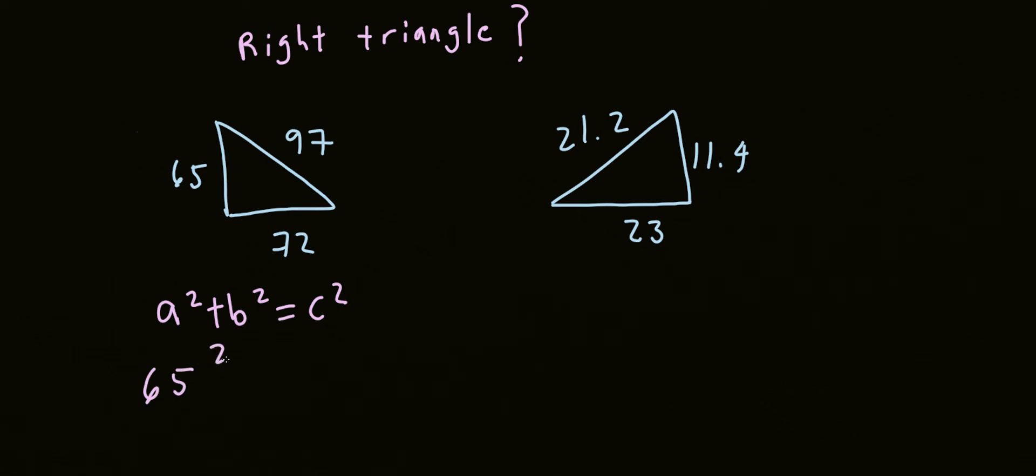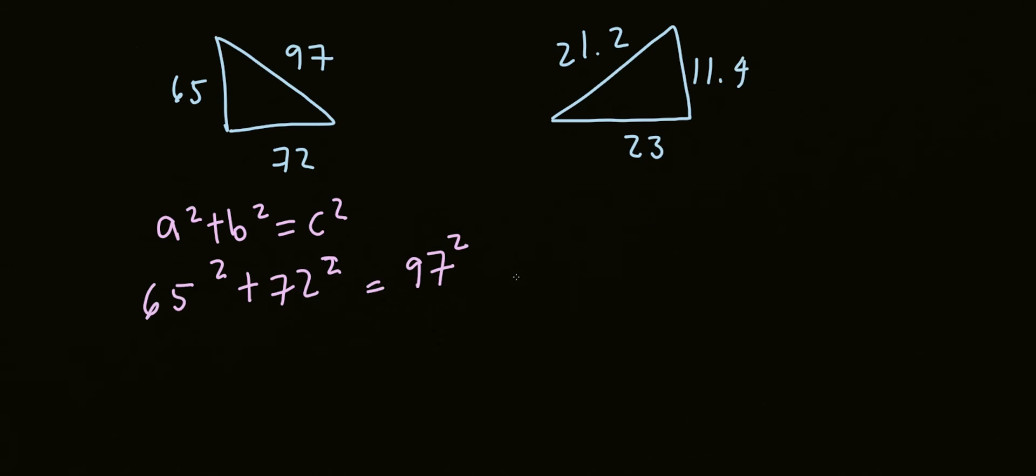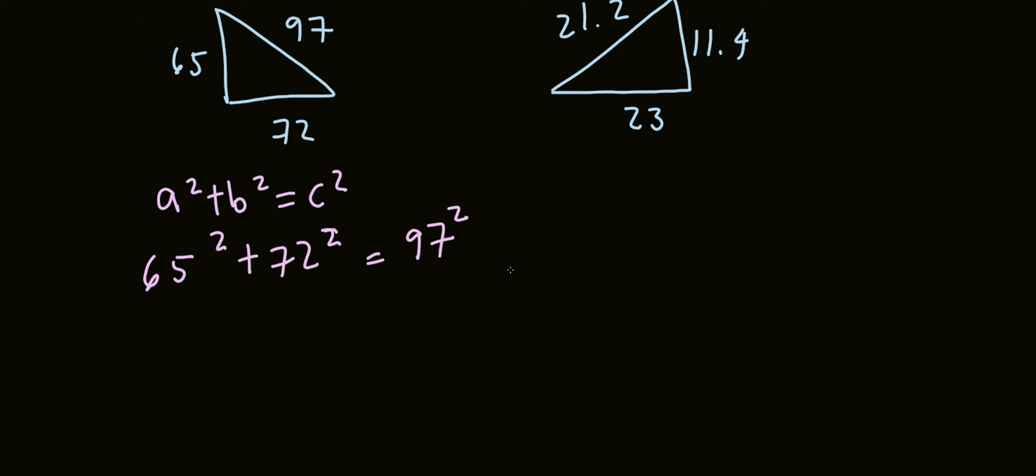So we know that the two sides are 65 and 72, and c is 97 squared. So let's check if they are equal to each other. So it's 65 squared plus 72 squared, and that will give us 4225 plus 5184, which is 9409. So we want to find out if this added up is 9409.